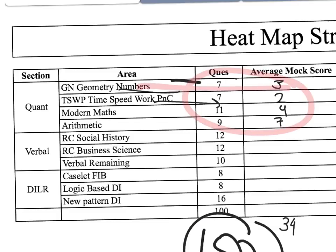So from my analysis, I know that Maths and Geometry is my strong area, and I am average in Time, Speed, and Time and Work. Modern Maths is one of the two areas I need to work on. In Arithmetic I am doing very well. I am average in Numbers and Geometry and good in Arithmetic — I just need marginal improvement there. But in Time, Speed and Modern Maths, I need a drastic improvement. The moment you do this, you will easily identify your strong and weak areas based on your actual mock performance, not just perception.